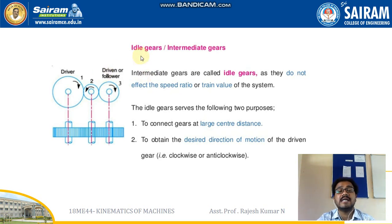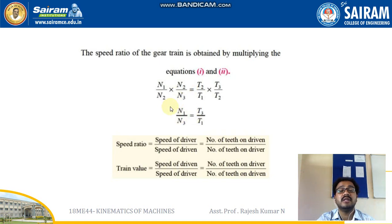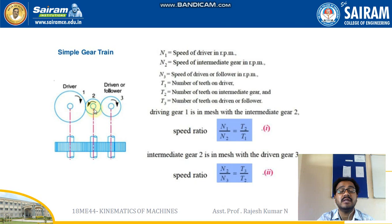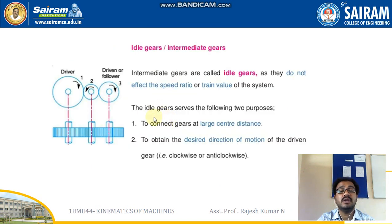Now let's discuss idle gears or intermediate gears. In a simple gear train with a driver, a follower, and an idle gear in between, these intermediate gears are called idle gears because they do not affect the speed ratio or the train value — as we saw in the previous derivation where T2 cancelled out. The purpose of idle gears is to connect gears at a large center distance, and to bridge the distance between the driver and driven shafts.